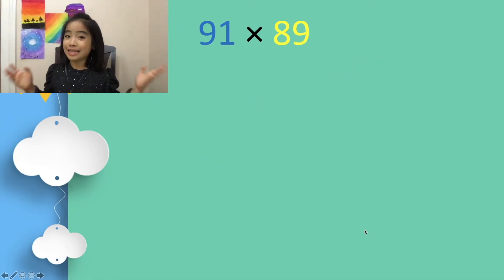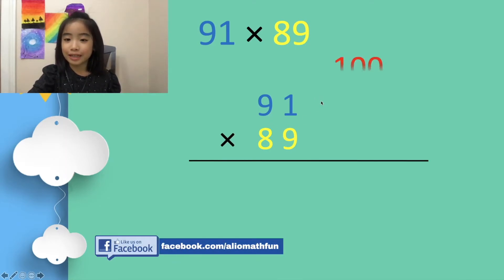Now, let's look at a trickier example. It's 91 × 89. Again, we write it in our normal vertical form. From 91 to 100 is 9 more, and from 89 to 100 is 11 more.